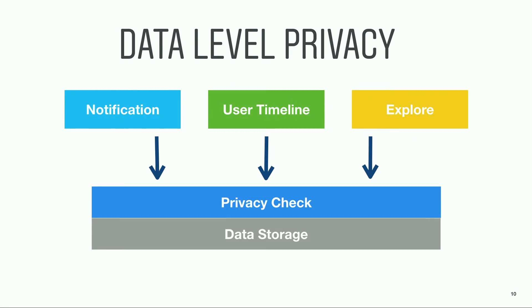With data-level design, privacy checks are hidden from product code — they happen automatically and implicitly. When developing new features, developers can focus on the business logic, and whatever returns from the data API is already safe. We also don't have the overfetching problem. Privacy-invalidated contents are filtered out at the first place so that all the candidates provided to the ranking pipeline are already good. The downside is that the privacy check might happen on every single object fetch. During a feed request, the same user object might be fetched hundreds of times, so building an appropriate cache is critical.